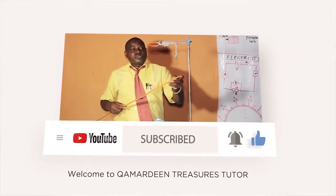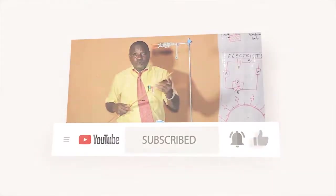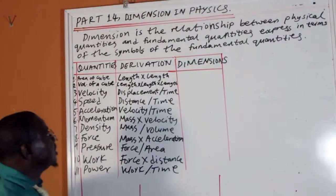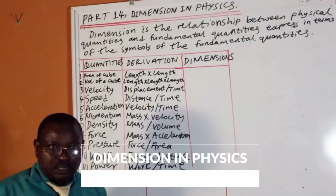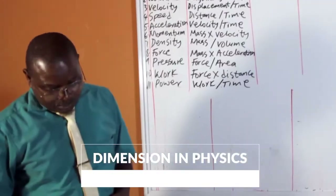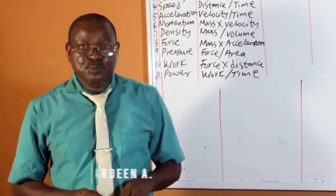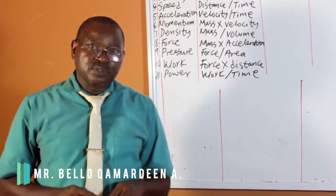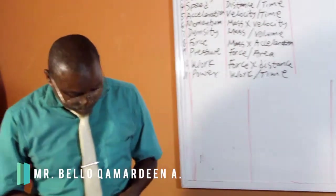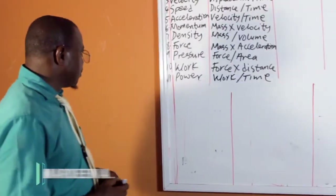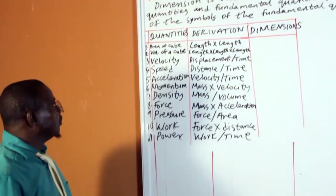We want to demonstrate practically the way it should be done. Part 14: dimension and physics. Dimension is the relationship between physical quantities and fundamental quantities, expressed in terms of the symbol of fundamental quantities. We want to examine about 11 quantities.